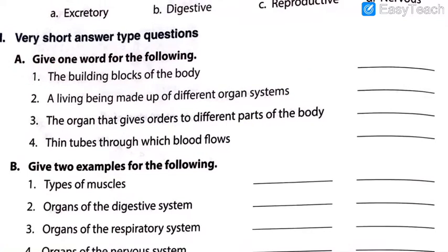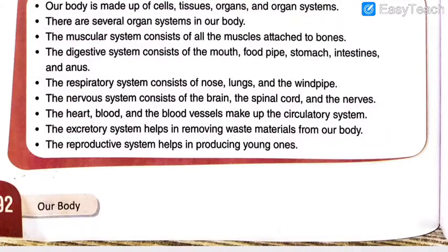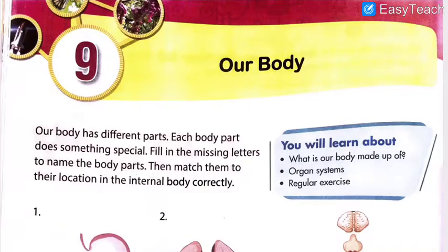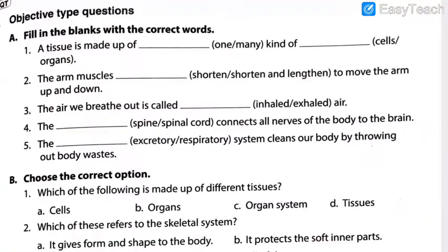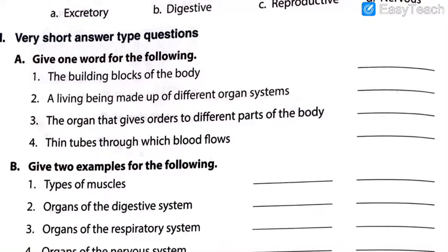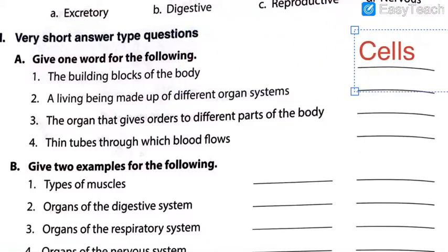Section A: Give one word for the following. Number 1 — the building blocks of the body. Which thing is called the building blocks of the body? This was on the very first page of the chapter. Here it is written that cells are the building blocks of the body. So the answer will be cells. Let us write the answer: cells. Building blocks of the body — cells is the answer.